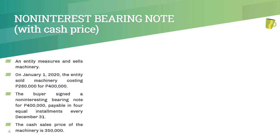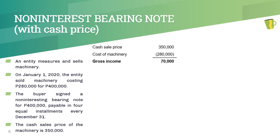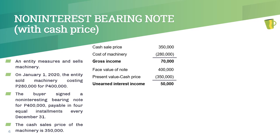Say we have a non-interest-bearing note of 400,000 pesos, payable in equal installments of 100,000 pesos. The cash price is 350,000 pesos. The gross income amounting to 70,000 pesos is computed as the difference between the cash price — not the face value — and the cost of the machinery. The difference between the face value of the note and the cash price amounts to 50,000 pesos.